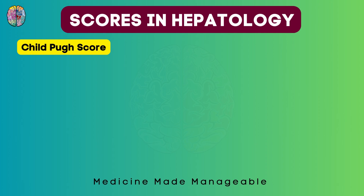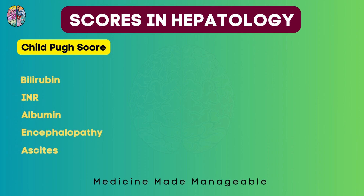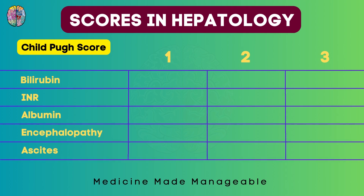We need to learn the scoring system since this was asked in previous exams, and we'll attempt a question at the end of this video. There are 5 components and 3 points given based on severity. For bilirubin: if it is less than 2, we give a score of 1; if it is between 2 and 3, a score of 2; and if it is more than 3, a score of 3.